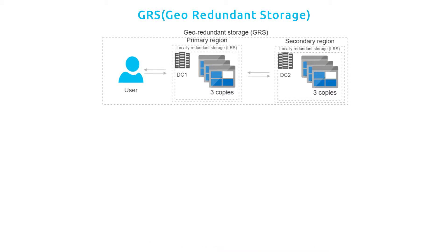The next one is Geo-Redundant Storage, where your data is replicated asynchronously with three copies of data in the primary region — basically local redundancy — plus another three copies of the data stored in a secondary region. Asynchronously means that you don't have read or write access to the secondary region. If there is a failure in the primary region, Azure Storage will fail over to the secondary region, and you probably won't feel this failover. GRS is the most resilient of the replication schemes for storage accounts.